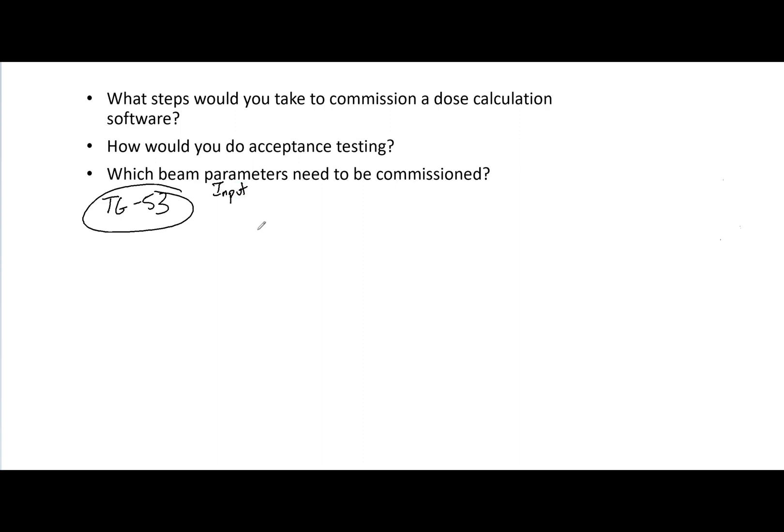You want to check the algorithm against measurements — those go together. You want to look at the accuracy of the algorithm, and then you want to see when the dose algorithm breaks down and becomes inaccurate. You're going to want to try really high HU differences between lung and body interfaces, small fields, and a lot of modulation — push this algorithm to its limit so you understand where the accuracy starts to break down.